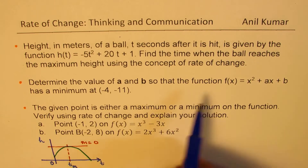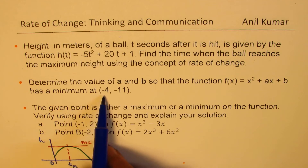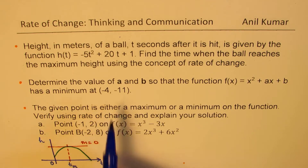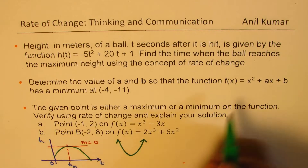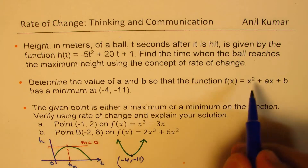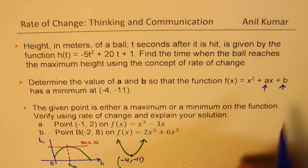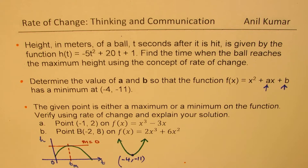In the second question, we have the parabola x squared plus ax plus b with a minimum at (minus 4, minus 11). The parabola opens upwards since the leading coefficient is positive. We need to find the values of a and b using the concept of rate of change, not completing the square.